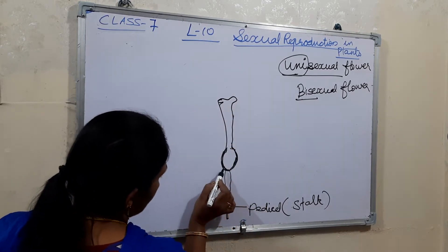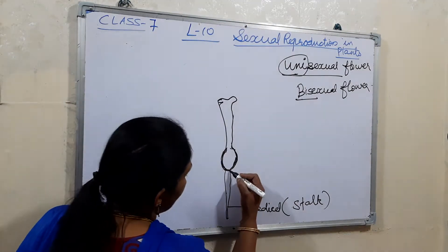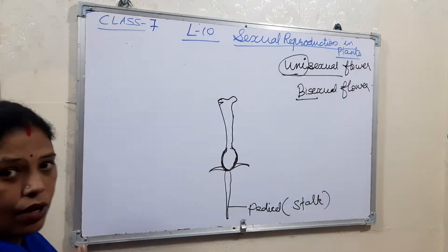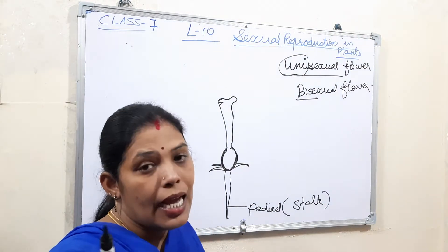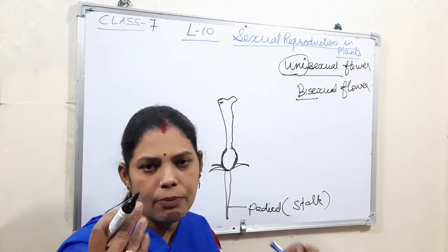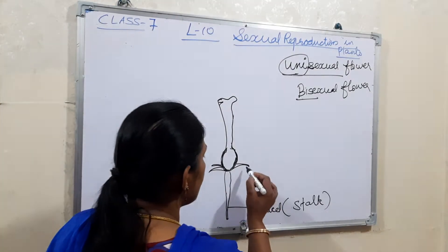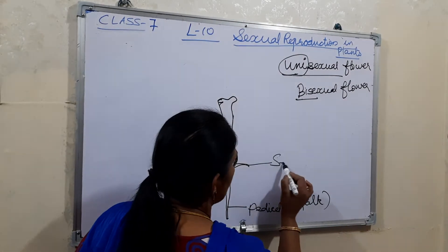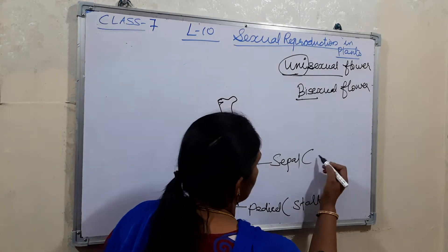From here you can see on the outside there are green colored structures — they are the coverings of the flower. In some kinds of flowers they will be fused and some will be separated. If five petals are there then five sepals are also there. This green colored portion, the outermost whorl of a flower, is known as the sepal, or you can call it the calyx.